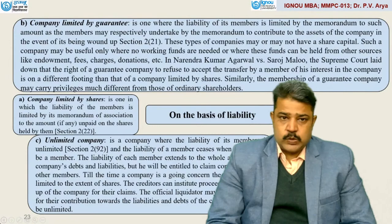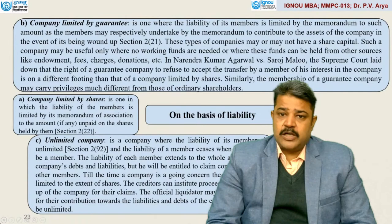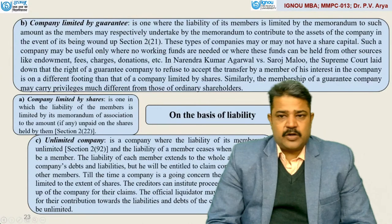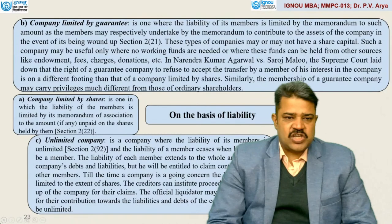Company limited by guarantee is one where the liability of its members is limited by the memorandum to some amount as the members may respectively undertake by the memorandum to contribute to the assets of the company in the event of being wound up — Section 2, Subsection 21. These types of companies may or may not have share capital. Such a company may be useful only where no working funds are needed, or where these funds can be held from other sources like endowment, fees, charges, donation, etc.